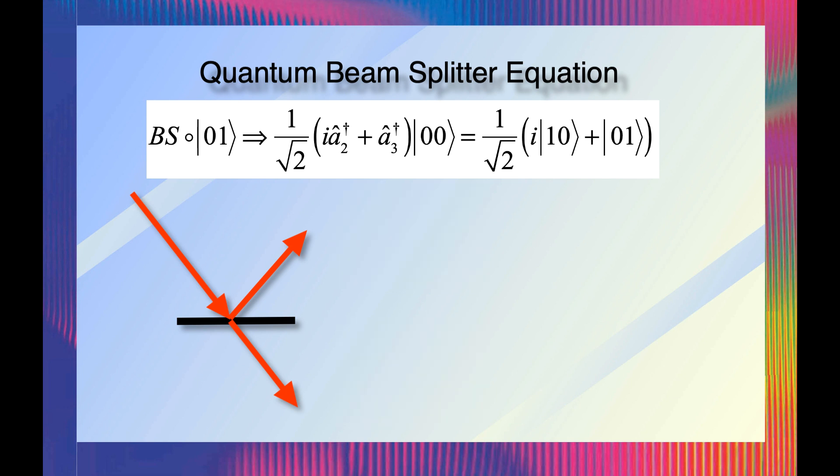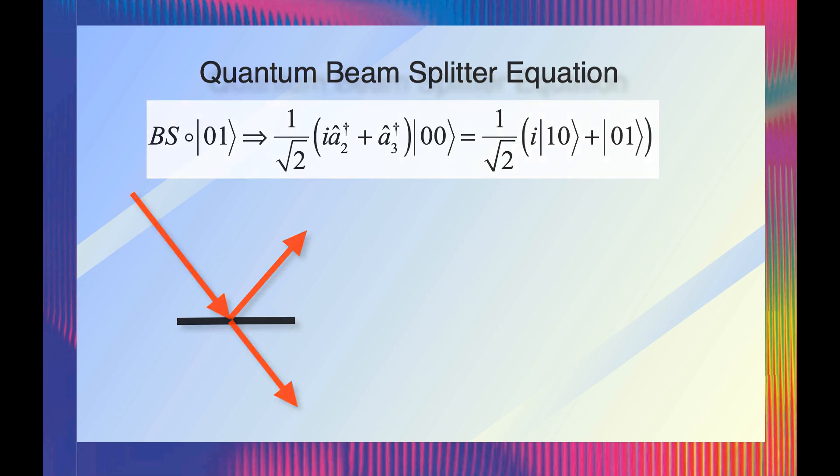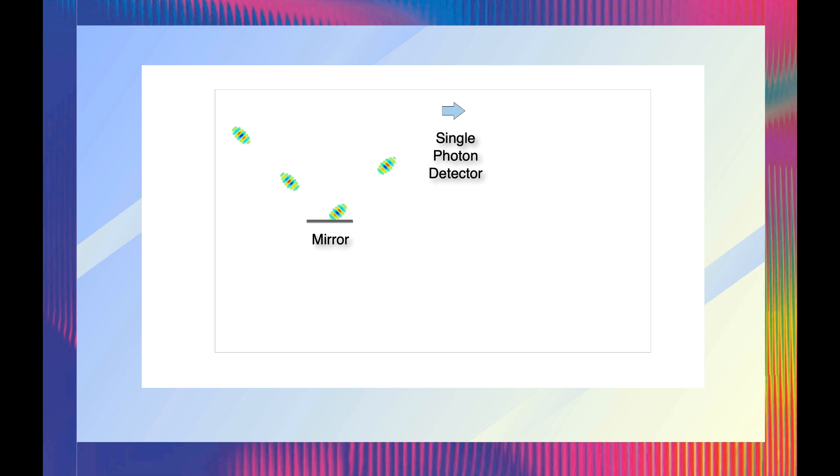Let's see if we can turn this mathematical description of the quantum beam splitter into something visual. First, consider a stream of photons hitting a mirror. The photons all reflect and are all detected by a single photon detector that outputs an electrical pulse. Such a regular stream of photons is not the usual situation. Most light sources emit photons randomly.